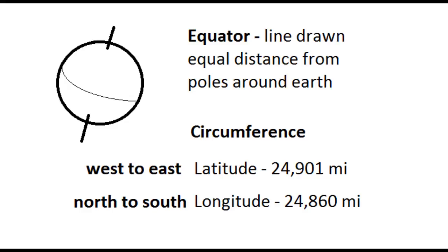Then we have the circumferences, which we have the west to east, or latitude circumference, which is 24,901 miles. Then we have the north to south, which is the longitude circumference, and that's 24,860 miles.